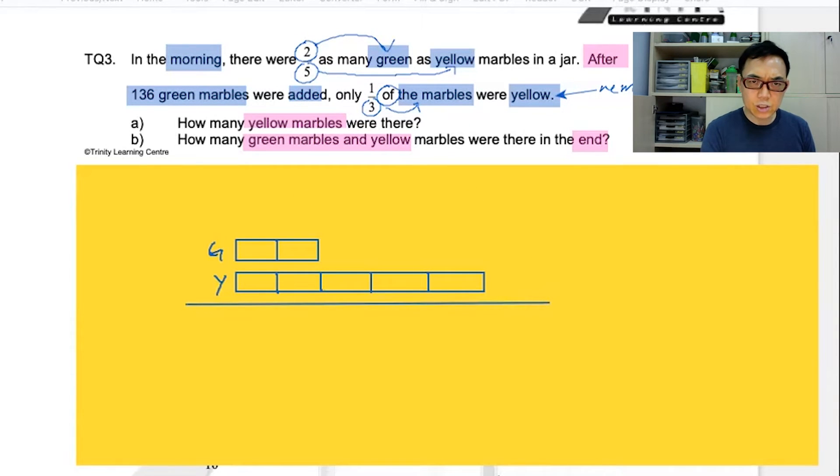As I said just now, yellow remains unchanged. So, in the end, the yellow, the model for the yellow will be the same as it was at first. The total length of the model would still be like this. This is still yellow.